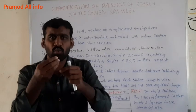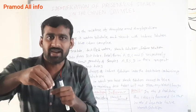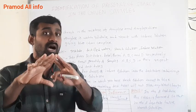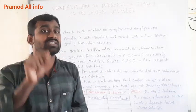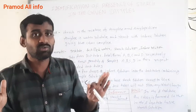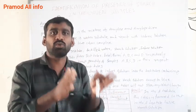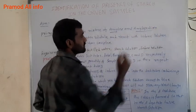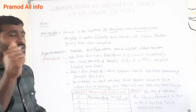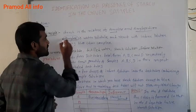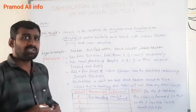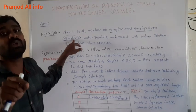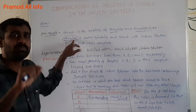When we add water to starch and prepare a solution, the starch converts and divides into amylose and amylopectin. After this conversion, amylose reacts with iodine.